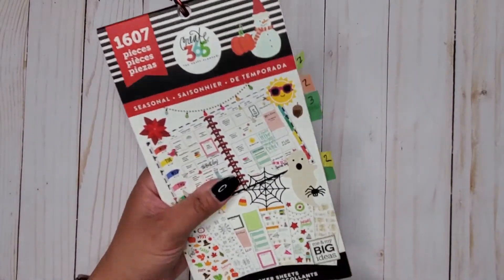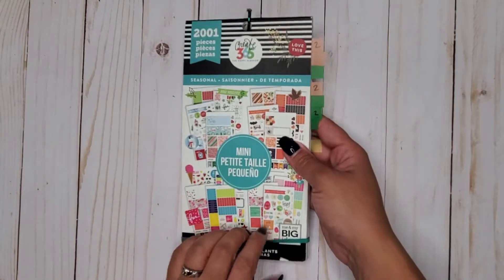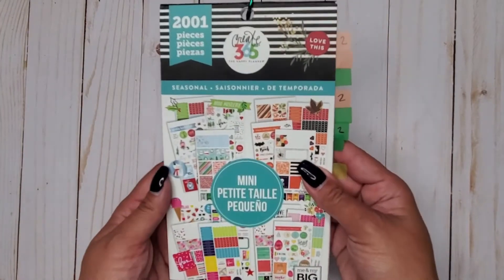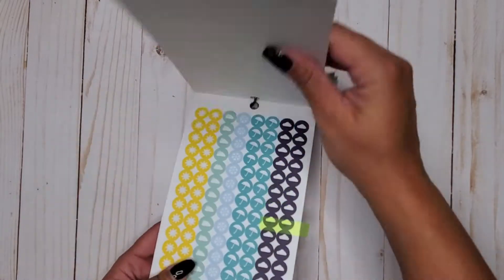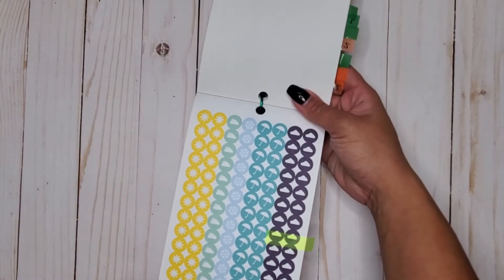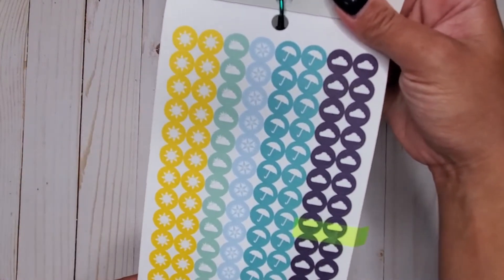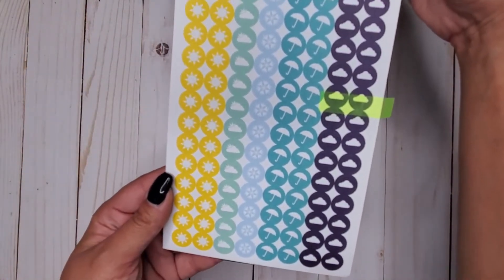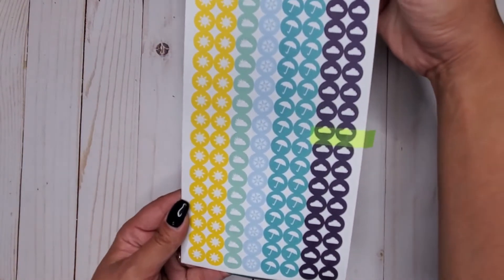Then I have seasonal mini 2001. In here we have that same little page that the classic size had, these ones are just a little bit smaller but we get those same. We only get one page but they're a little bit smaller so you do get a couple more than you did in the classic size.